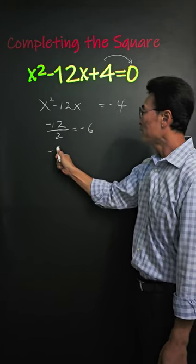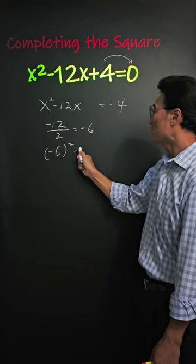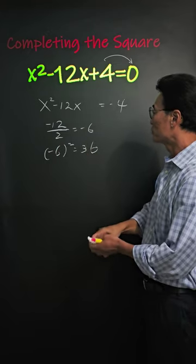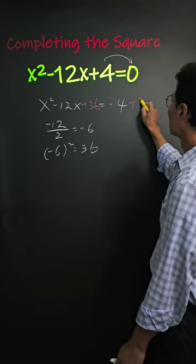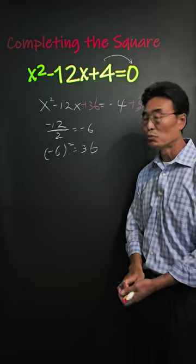Then take that negative 6 and square it. That's the number we're going to add to the left side of the equation and the right side of the equation as well.